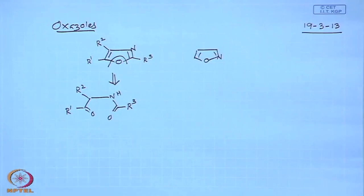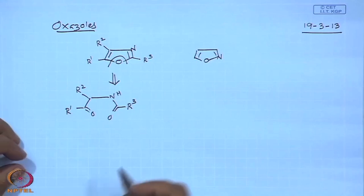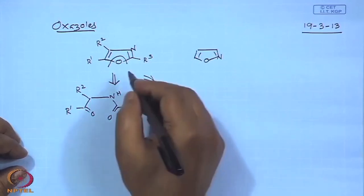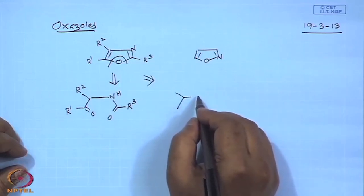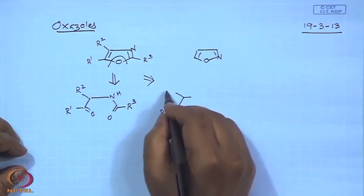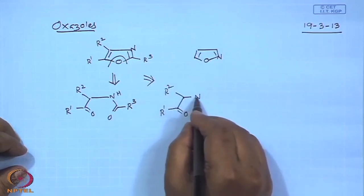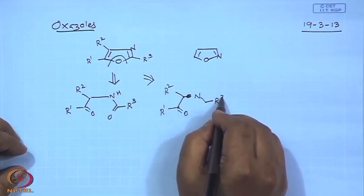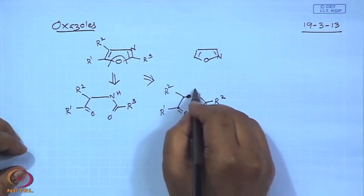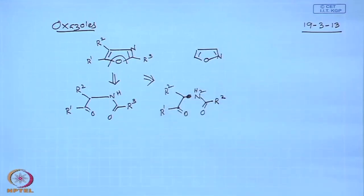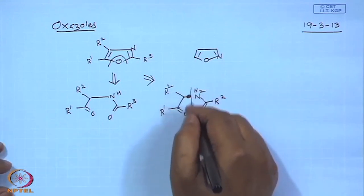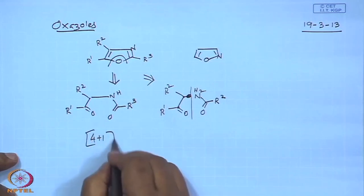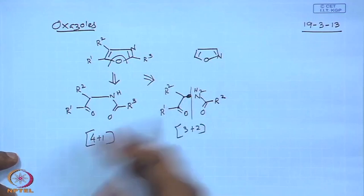The other way is to think about a 3+2 mode: you can start from a 2-atom fragment and a 3-atom fragment. For example, something like NH2 combined with an appropriate partner. There are many more 3+2 modes as well. We will look at the 4+1 mode first — that is the Robinson-Gabriel synthesis.